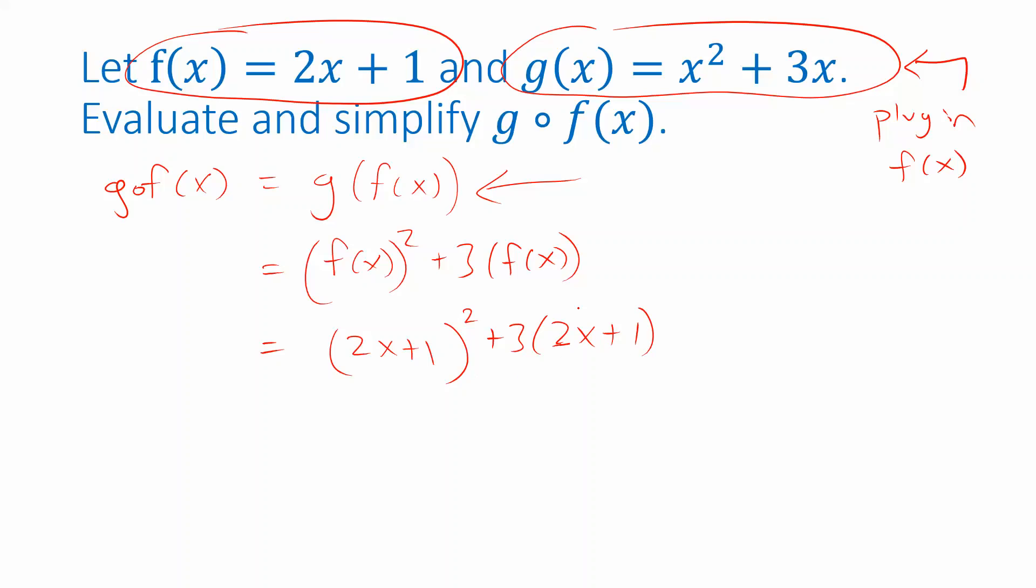Alright, and now we're going to be able to simplify. So let's expand this 2x plus 1 squared. That's 2x plus 1 times 2x plus 1. And then we can distribute here. 2x times 2x is 4x squared. 2x times 1 is 2x. 1 times 2x is 2x. 1 times 1 is 1. Distribute on the second piece as well. 3 times 2x is 6x. 3 times 1 is 3.